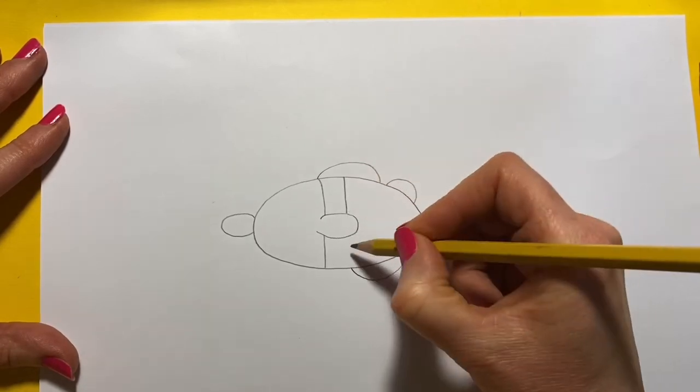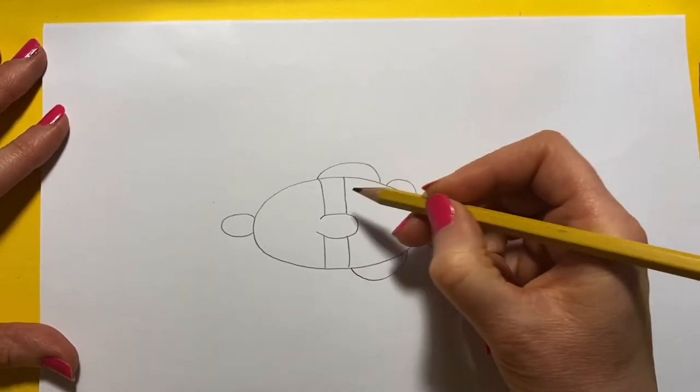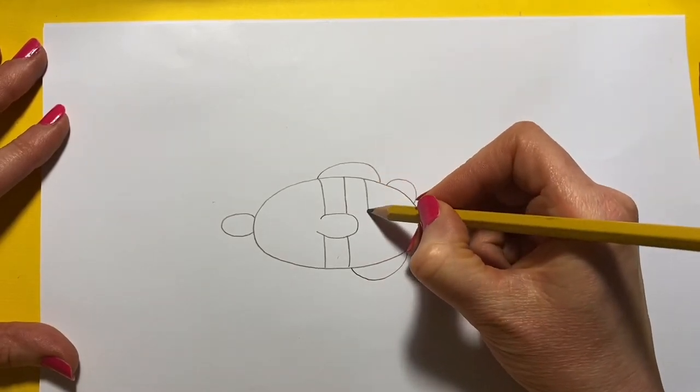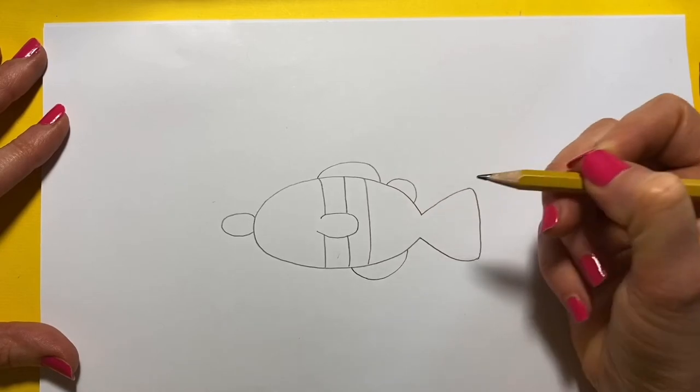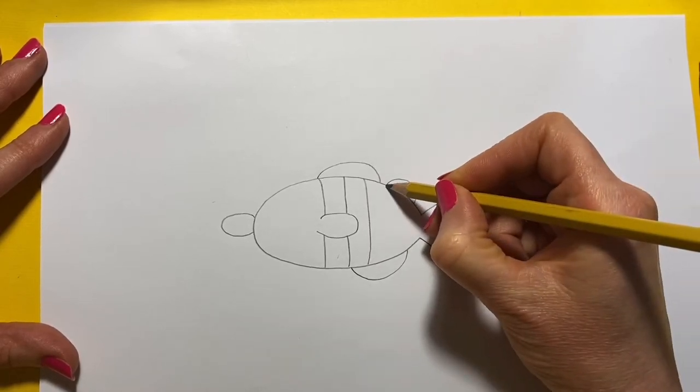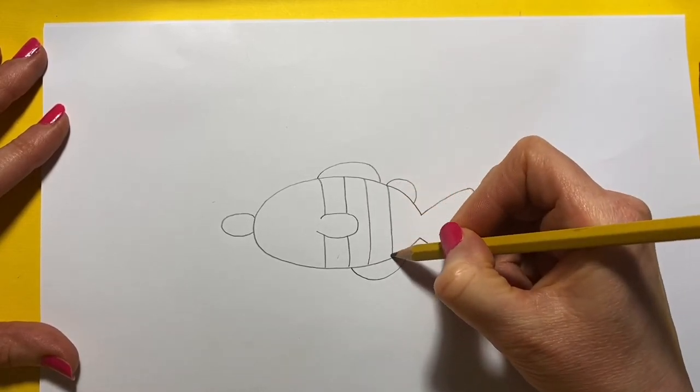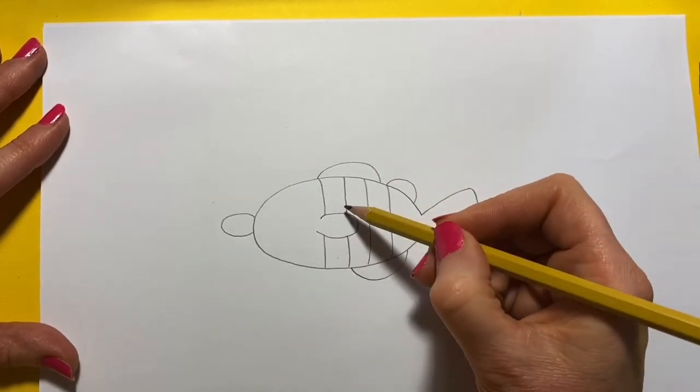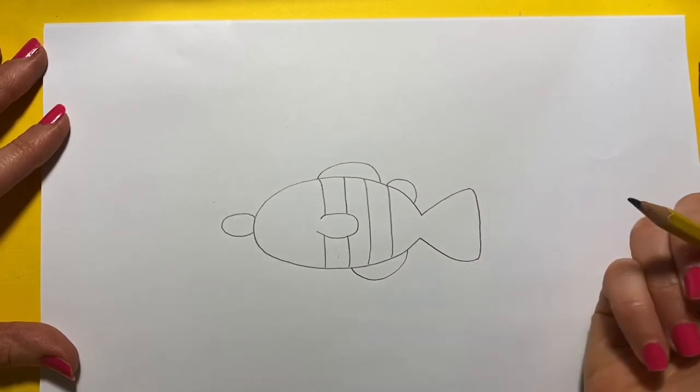And then another one and another one. So that's our first stripe. Then we'll do another one like that. One, two, three, four, I think that's all our stripes.